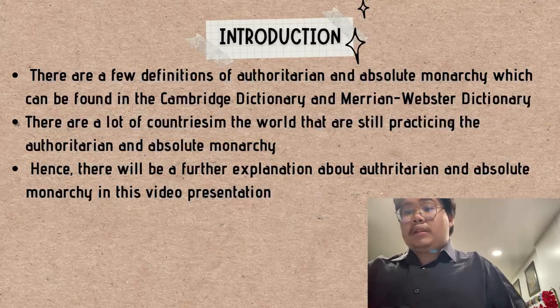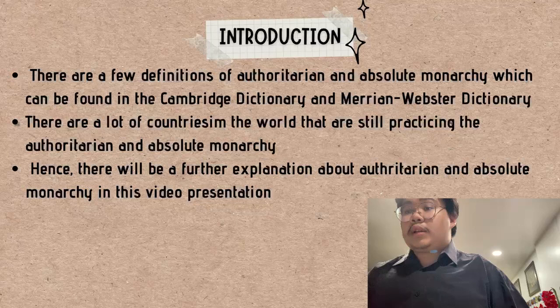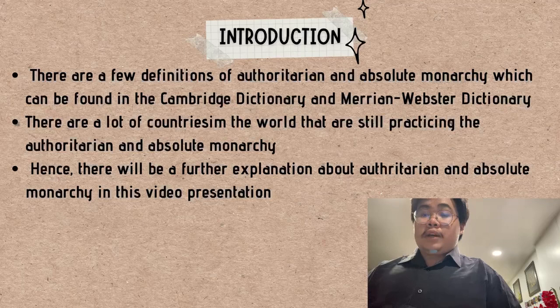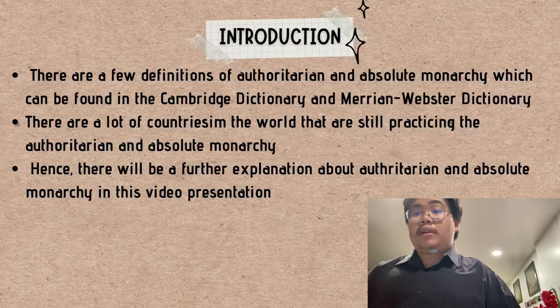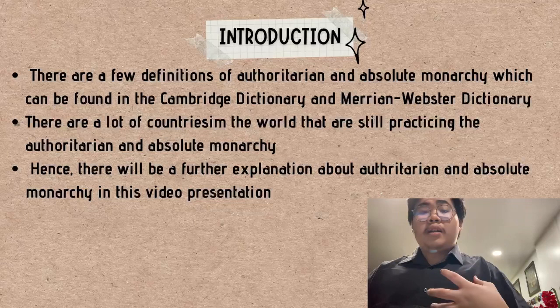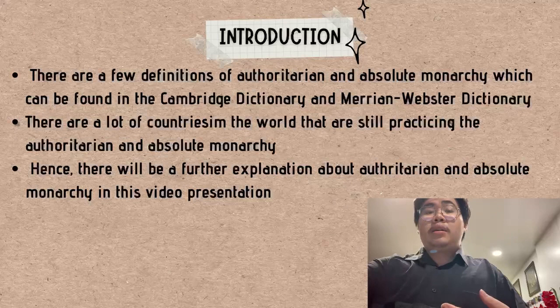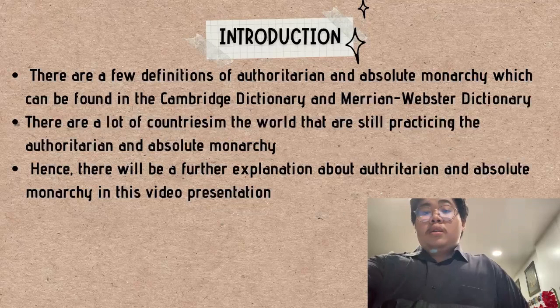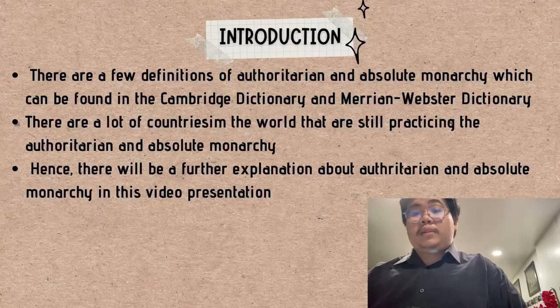First of all, there are a few definitions regarding authoritarian and absolute monarchy that can be found in the Cambridge Dictionary and Merriam-Webster Dictionary. According to the Cambridge Dictionary, authoritarian is defined as a type of government that demands people to obey completely and refuses to give them any freedom, while absolute monarchy is defined as a monarchic form of government where the monarch exercises the ultimate governing authority as the head of state and the head of government, thus wielding political power over the sovereign state and its subject people.